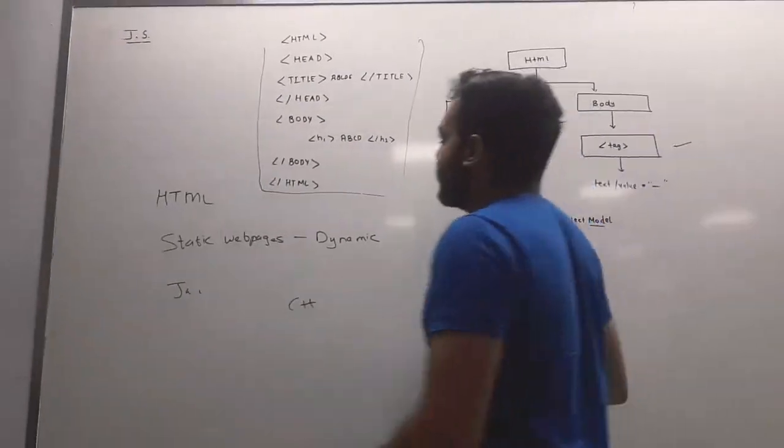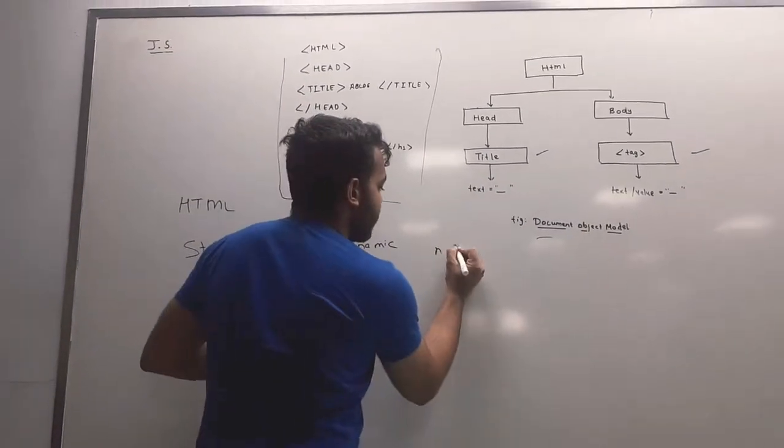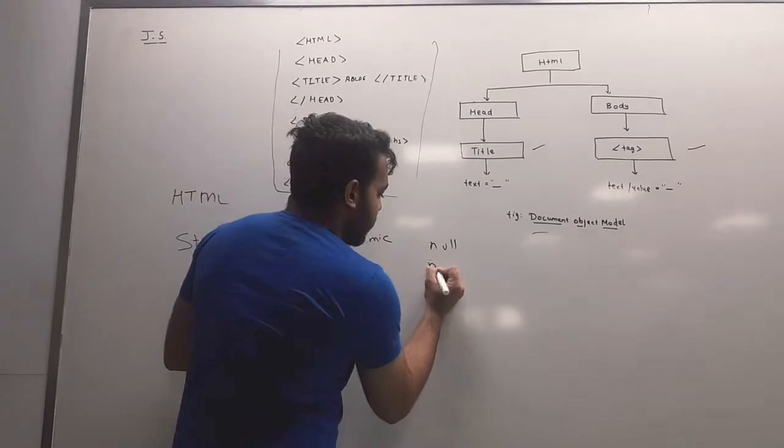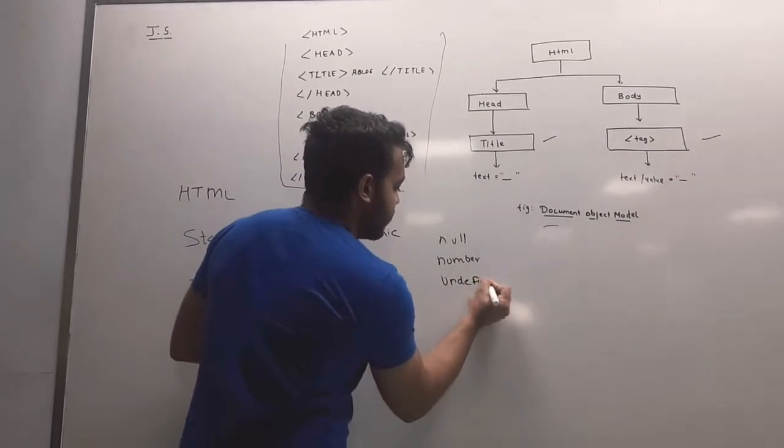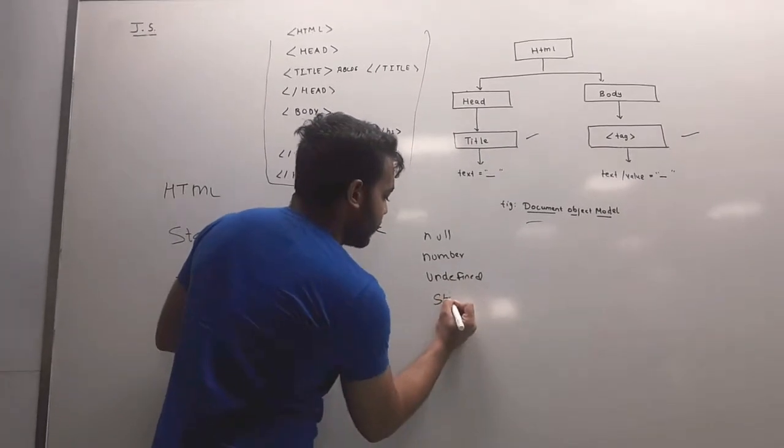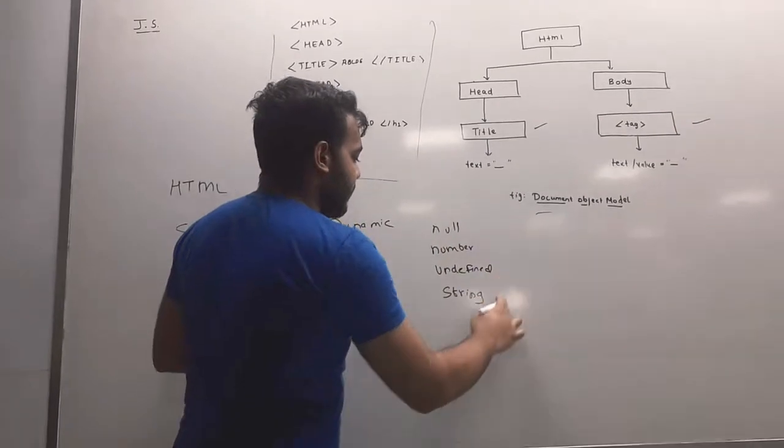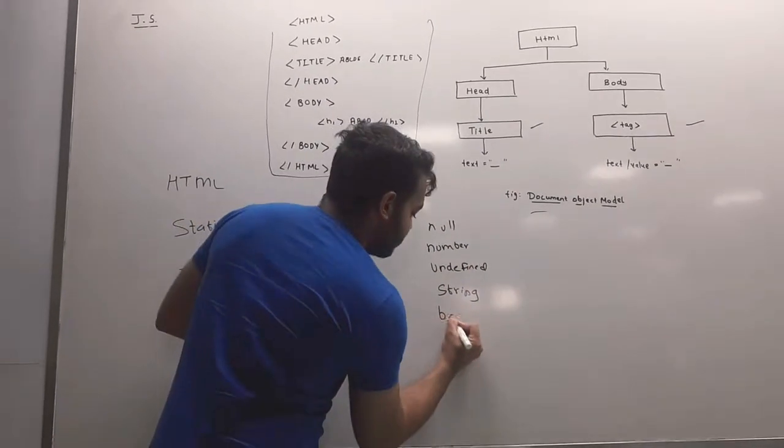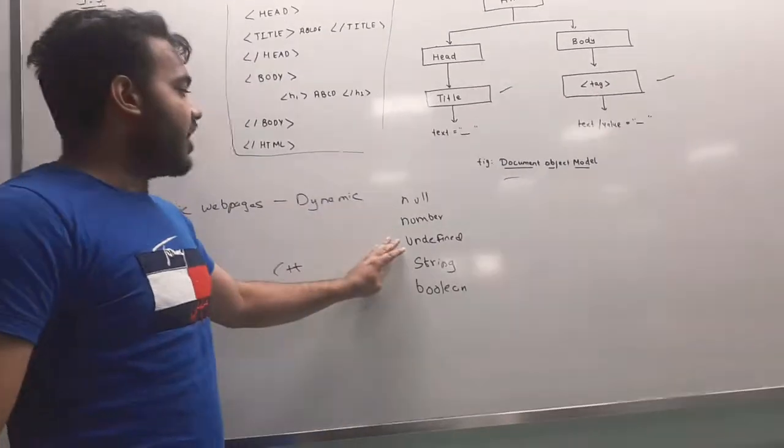In JavaScript, we use five kinds of variables: number, undefined, string, and boolean. These are the five types of variables using JavaScript.